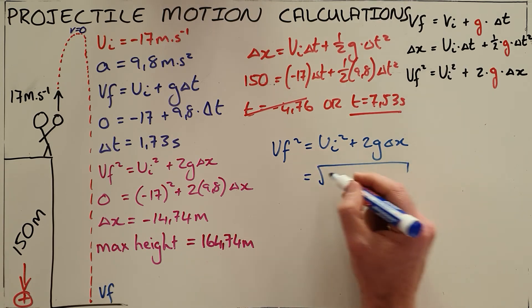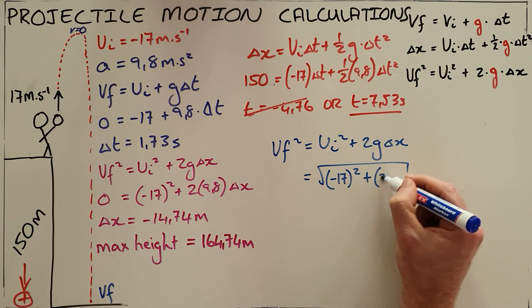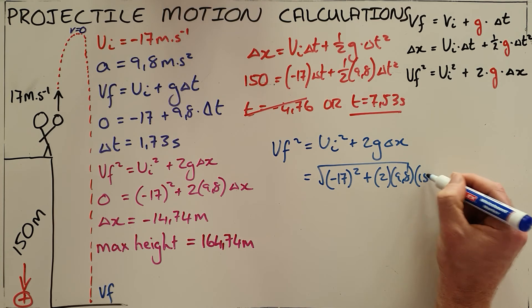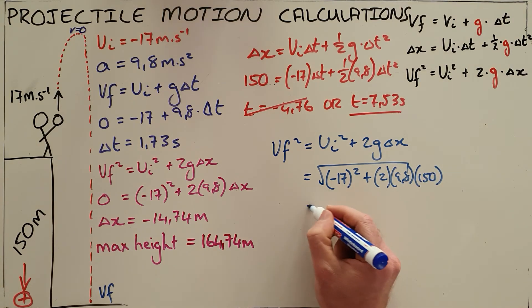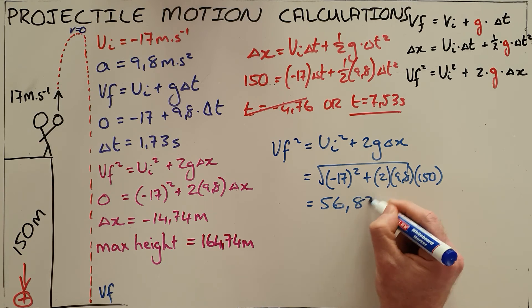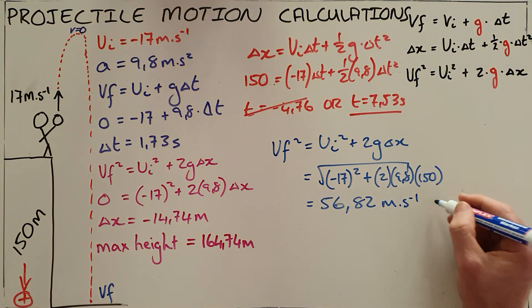That is equal to our initial velocity, which is still in the opposite direction, squared, plus 2 times 9.8 times our displacement of 150. All of those are downward and therefore positive, which means that our final velocity is a positive value, meaning the velocity is downward of 56.82 meters per second downwards.